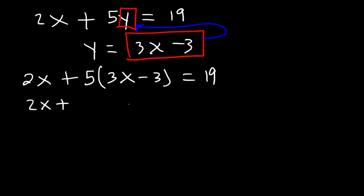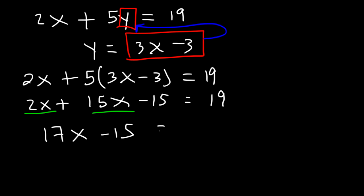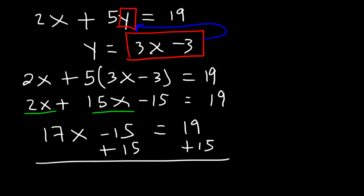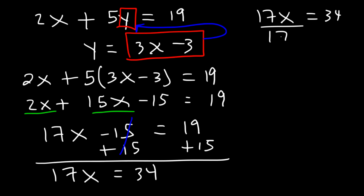Now let's distribute the 5. 5 times 3x is 15x, and 5 times negative 3 is negative 15. Now let's combine like terms: 2x plus 15x adds up to 17x. Our next step is to add 15 to both sides. So we have 17x is equal to 19 plus 15, which is 34. Next, we need to divide both sides by 17. 17 goes into 34 two times. Therefore x is equal to 2.